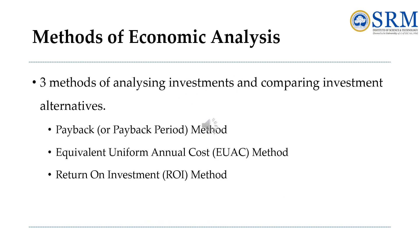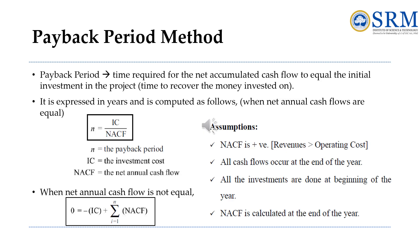There are three methods for analyzing investments and comparing investment alternatives. The first is the payback method, the second is the Equivalent Uniform Annual Cost method, and the third is the return on investment method. We will see them one by one with examples. The first is the payback method, also called the payback period method.